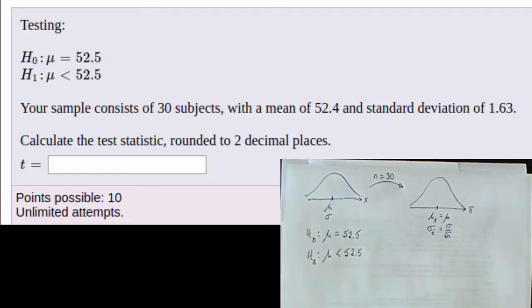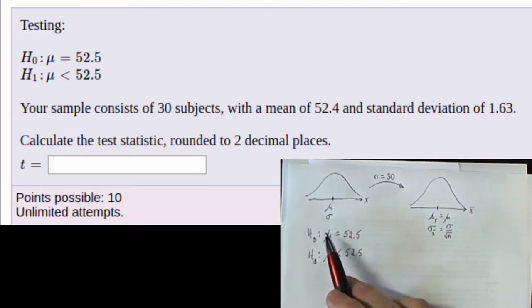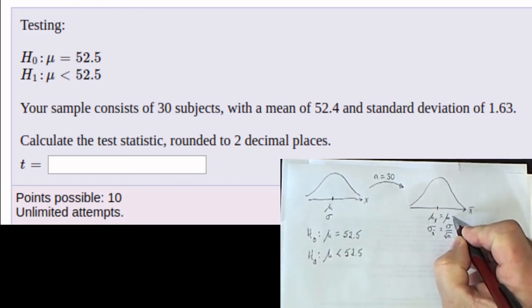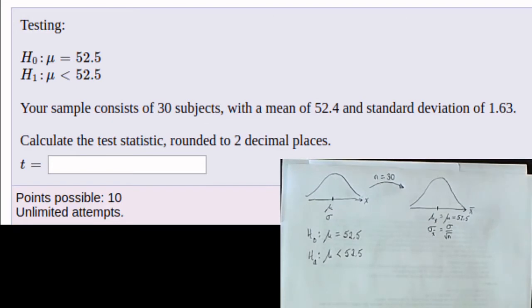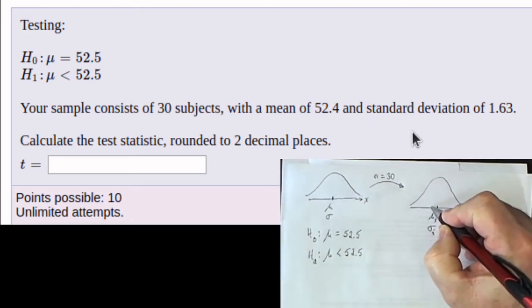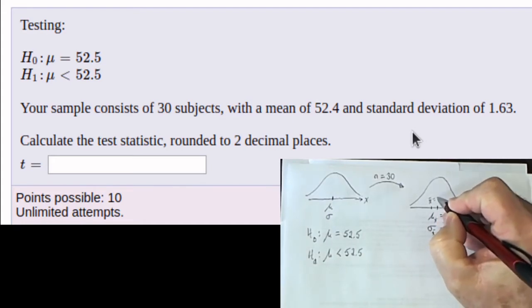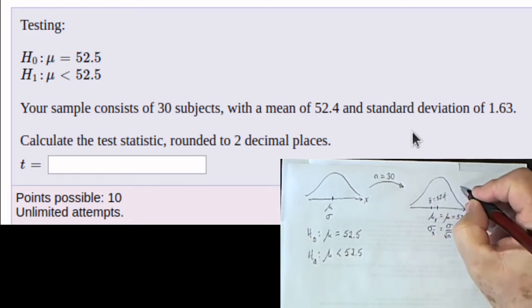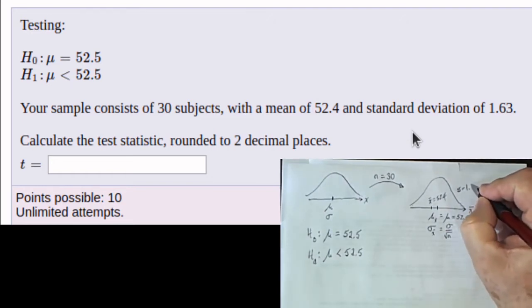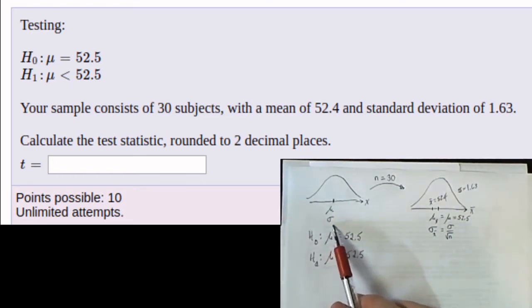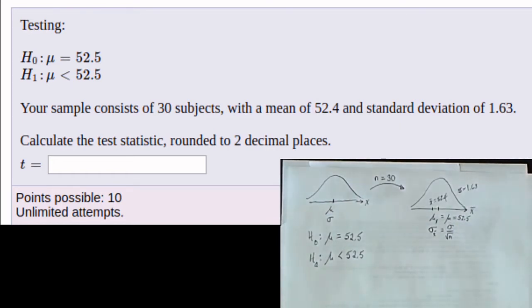We're going to assume the null hypothesis is true and see if something unusual happens. So this mean is going to be 52.5, and therefore the mean of the distribution of sample means will also be 52.5. We're told the sample mean x-bar is 52.4 — slightly less. The sample standard deviation s is 1.363. If we knew the population standard deviation, our third distribution would just be a standard normal distribution.